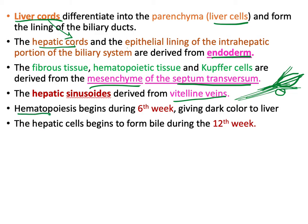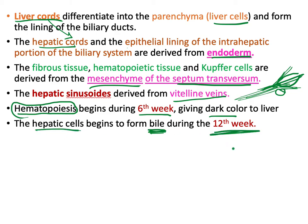The hepatic sinusoids are derived from vitelline veins. Hematopoiesis — the formation of blood cells — begins during the sixth week in the liver, giving it its dark color. Bile starts to be formed in hepatic cells at the 12th week.